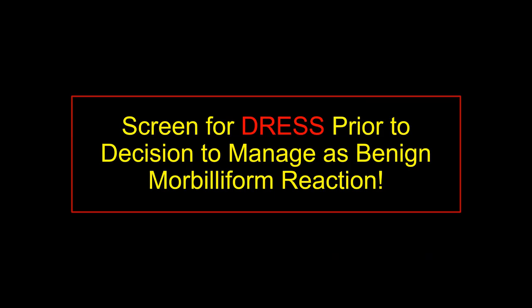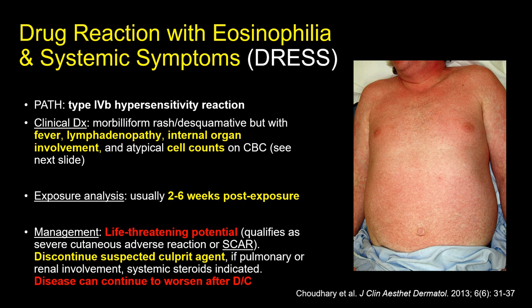Patients should not be contraindicated for use in the future unless DRESS is suspected. If we are going to be okay with challenging patients or treating through the benign morbilliform reaction, we have to be confident in our ability to recognize DRESS, which can also present with a morbilliform type rash. DRESS stands for Drug Reaction with Eosinophilia and Systemic Symptoms — a misnomer because DRESS does not always involve detectable eosinophilia. It is a type IVB hypersensitivity which can involve a morbilliform rash or an exfoliative dermatitis. More importantly, the patient needs to have systemic symptoms: namely fever, with other features including internal organ involvement, lymphadenopathy, and CBC findings.